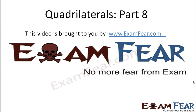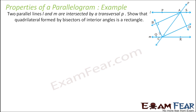Hello friends. This video on quadrilaterals part 8 is brought to you by examfear.com. Two parallel lines L and N are intersected by transversal P. We have to prove that the quadrilateral formed by the bisectors of these interior angles is a rectangle.